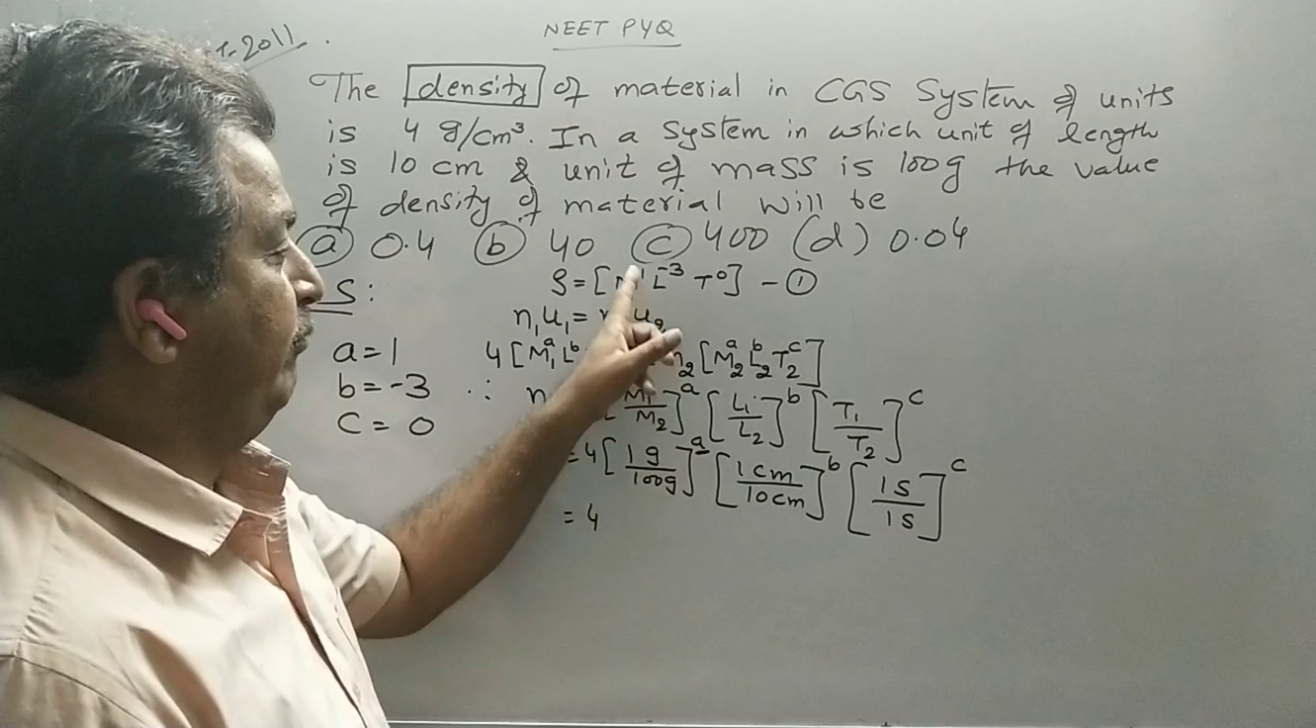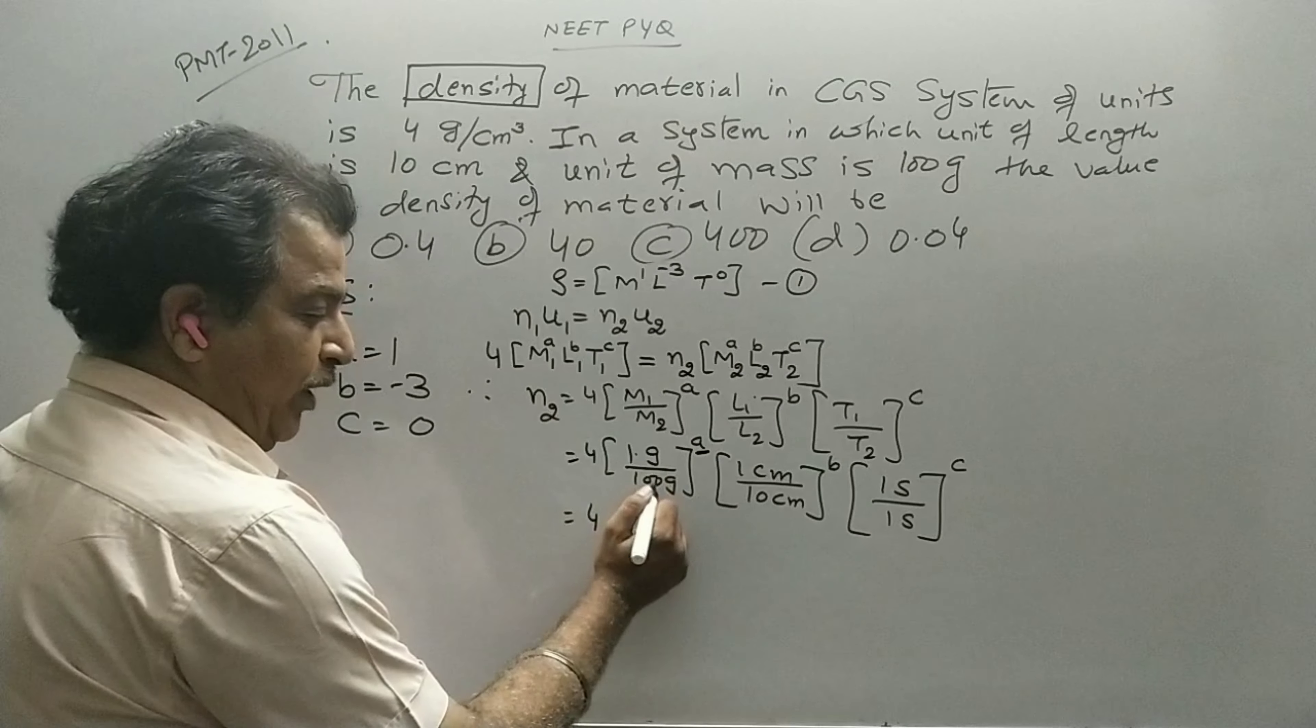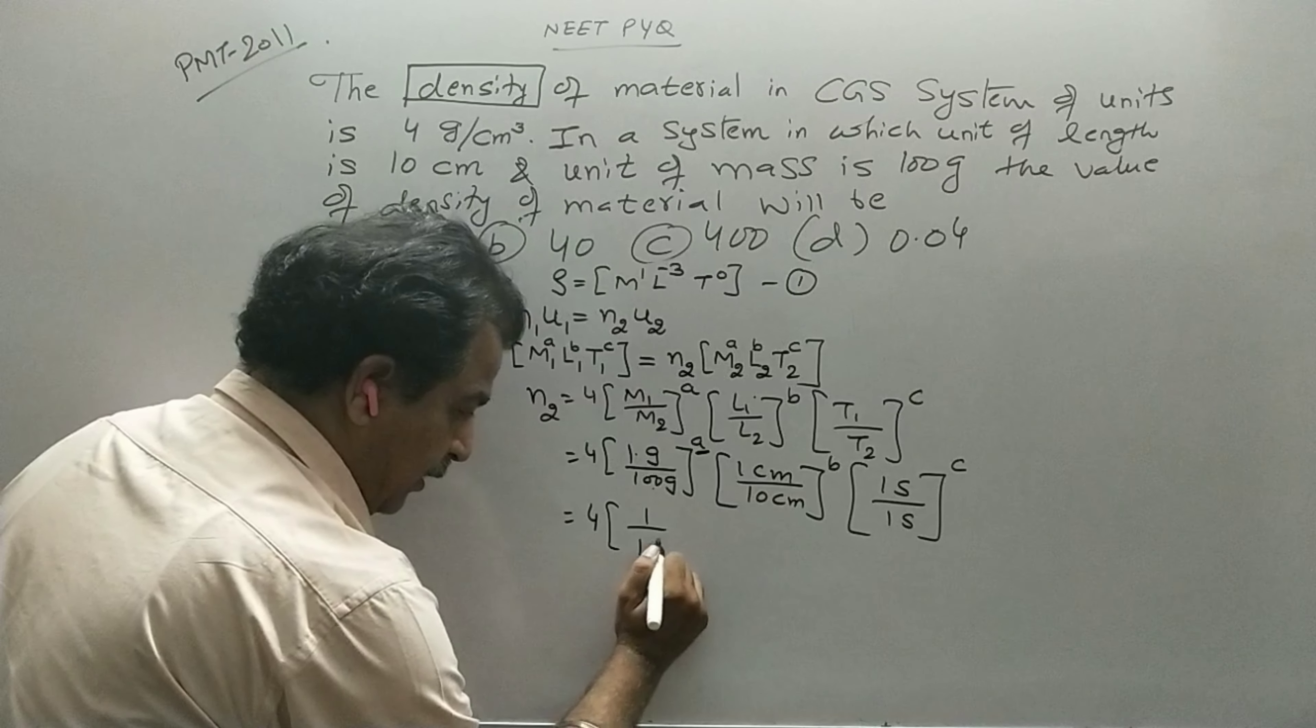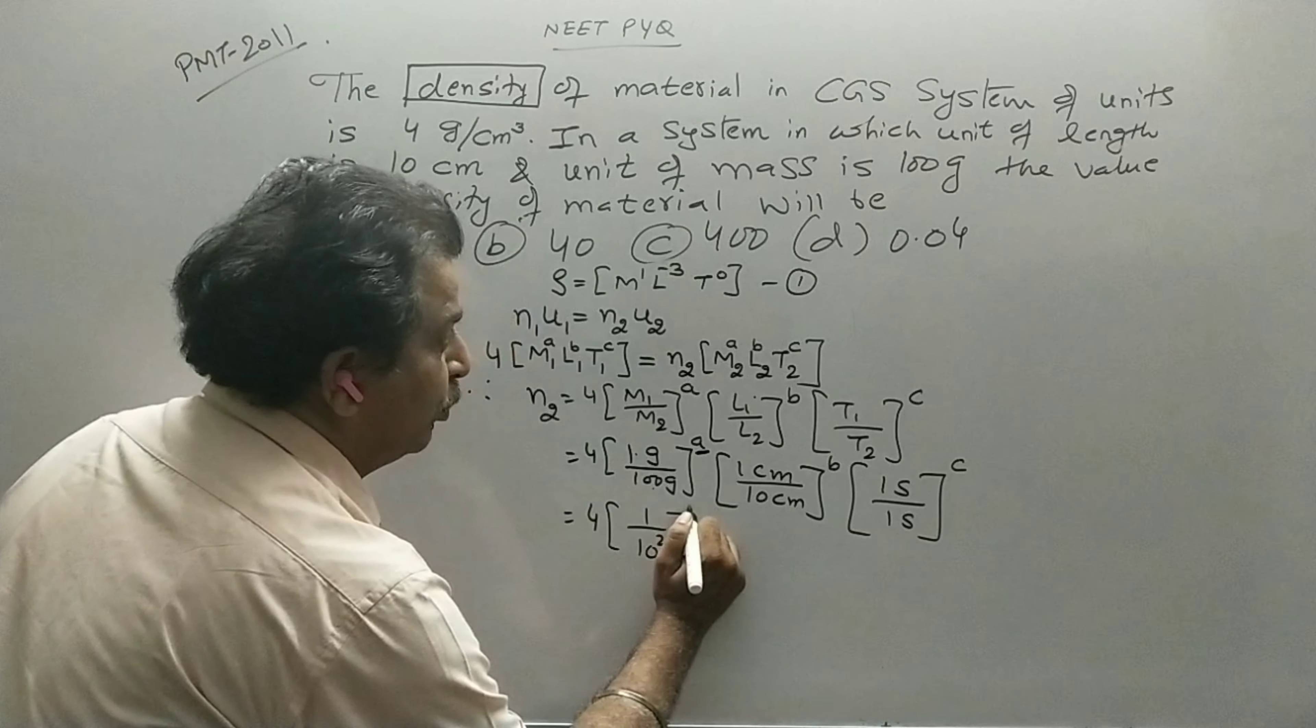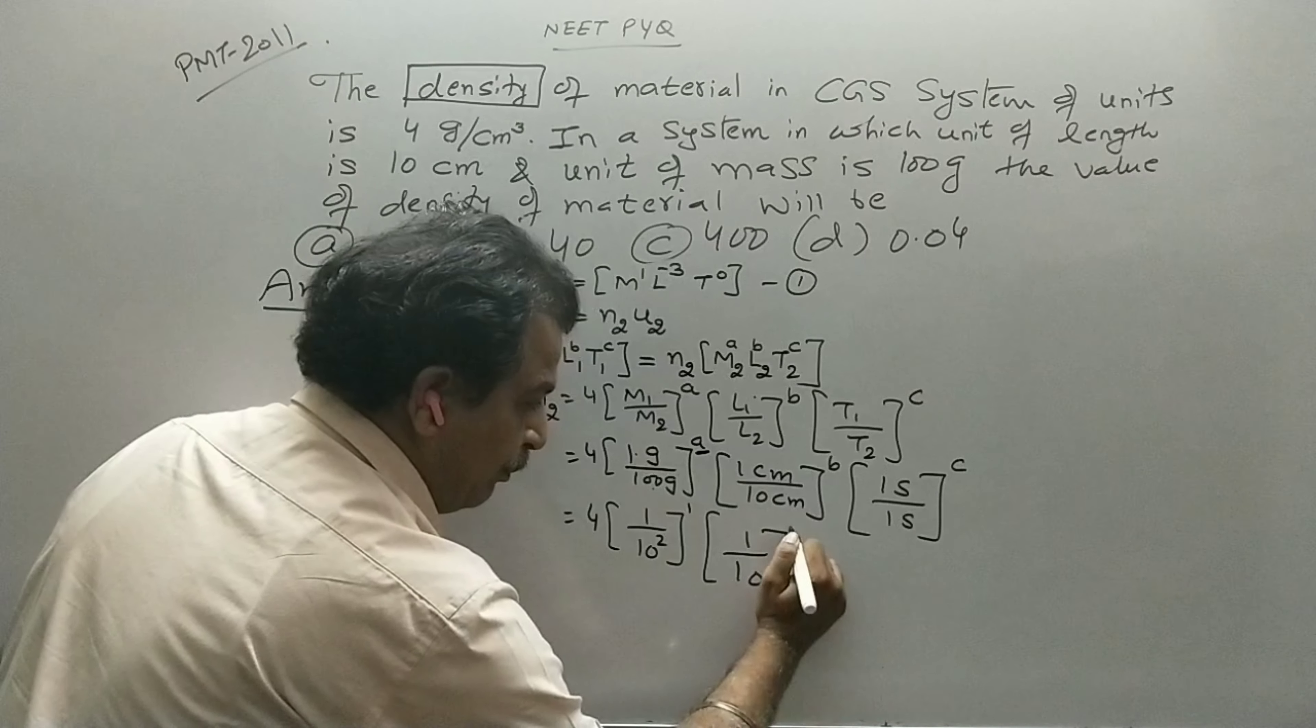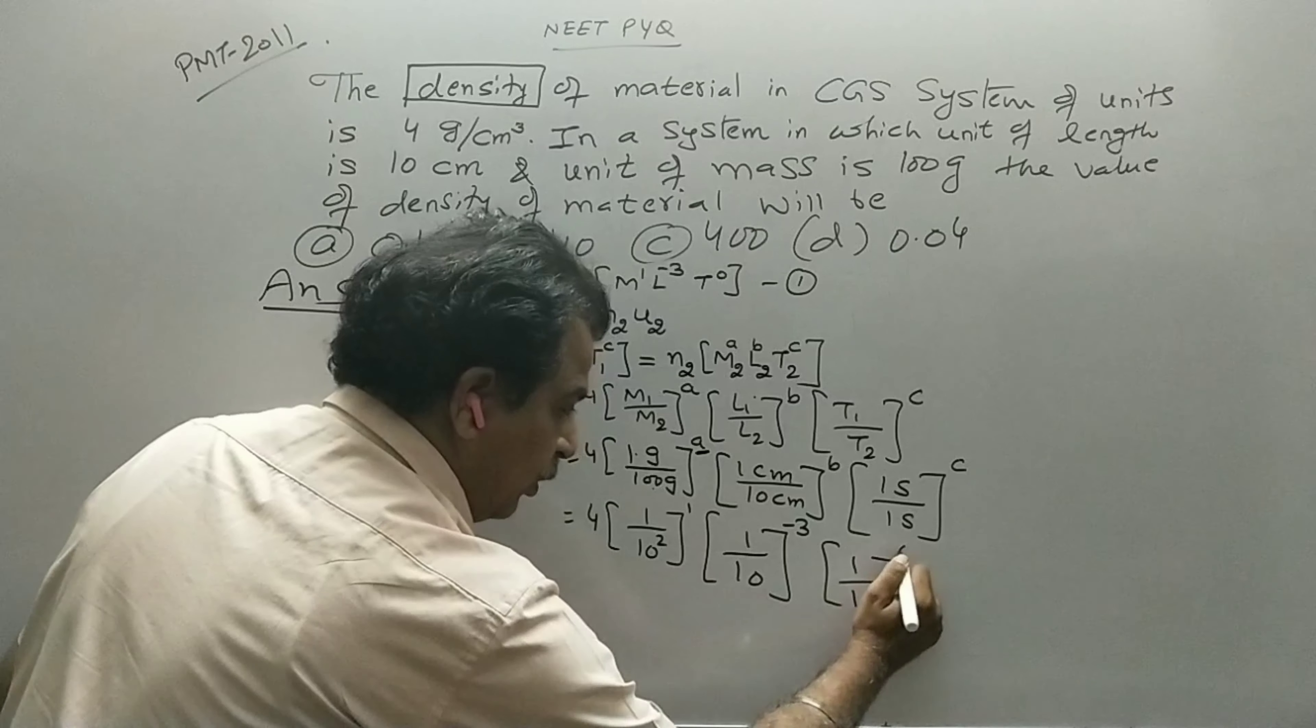Dimension for A is 1, B is minus 3, C is 0. So that will be written as 1 upon 100, 1 divided by 10 power minus 3, and 1 upon 1 power 0.